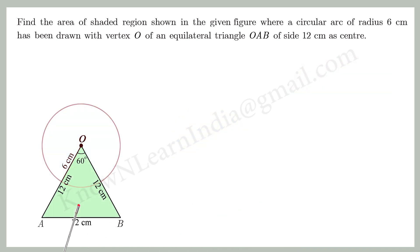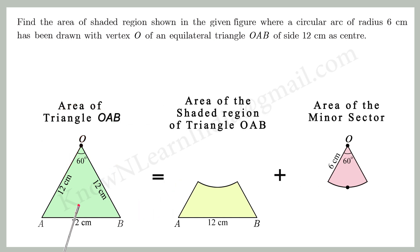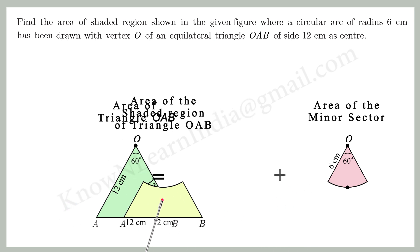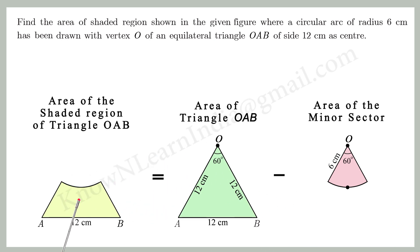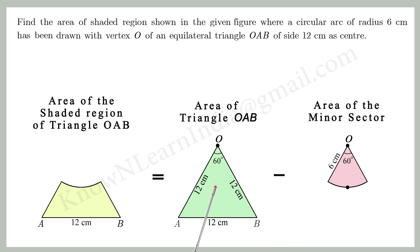The circle with radius 6 cm divides the triangle AOB into two parts: the shaded region of triangle OAB and the minor sector of the circle. From this, we can get the area of the shaded part of the triangle by subtracting the area of the minor sector of the circle from the area of triangle OAB.